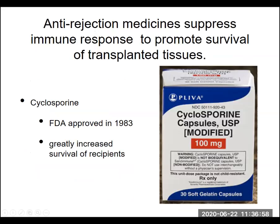Even if we've got a good match, we often have to use anti-rejection medication to suppress the immune response. Cyclosporine is an example, approved since the early 1980s. It basically turns down or suppresses the immune response, increasing the survival of patients who've received organ donations. But it means they have a suppressed immune system, making them potentially more susceptible to disease, so they often try to avoid exposure to contagious people.